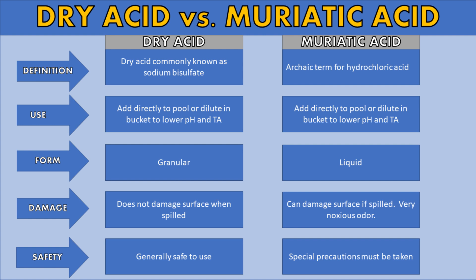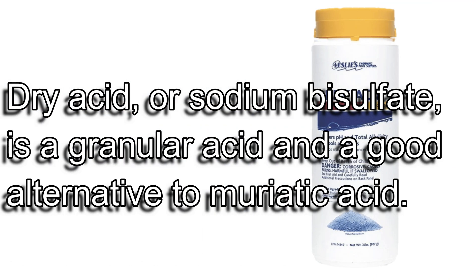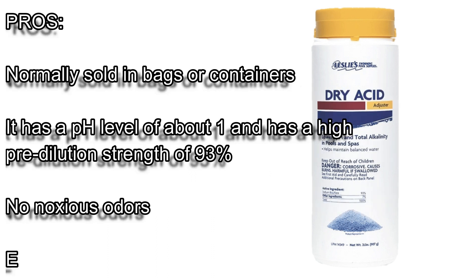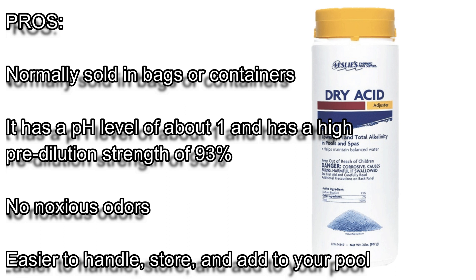Let's start with dry acid. Dry acid, or sodium bisulfate, is a granular kind of acid and it's a really good alternative to muriatic acid. Some pros: it's normally sold in bags or containers like the one you see here. It has a pH level of about 1, a high pre-dilution strength of about 93%, no noxious odors, and it's easy to handle, store, and add to your pool.